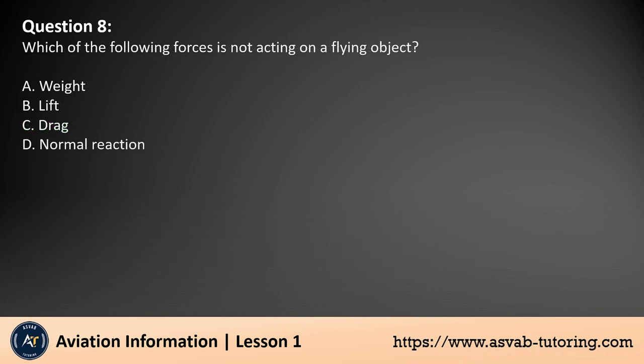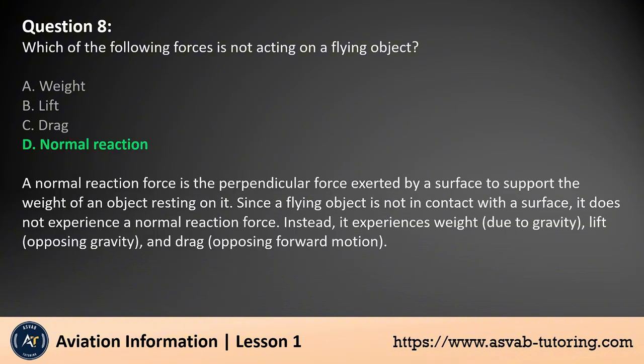Question 8. Which of the following forces is not acting on a flying object? A. Weight. B. Lift. C. Drag. D. Normal reaction. The answer is D. A normal reaction force is the perpendicular force exerted by a surface to support the weight of an object resting on it. Since a flying object is not in contact with a surface, it does not experience a normal reaction force. Instead, it experiences weight due to gravity, lift opposing gravity, and drag opposing forward motion.